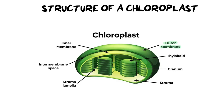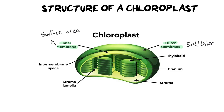First, we have the outer membrane. A membrane controls what enters and exits the chloroplast — whenever you see membrane, think of exit or entrance. Then you'll notice we have a second membrane. This can be confusing: if we're already checking what's going in and out, why do we need another? We need another membrane because of surface area. There are so many important reactions taking place inside the chloroplast that you need two membranes to ensure enough surface area so they're all happening simultaneously.